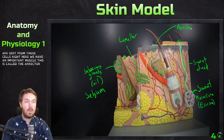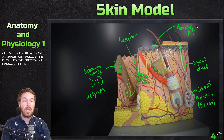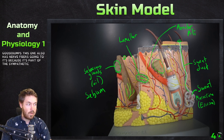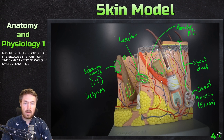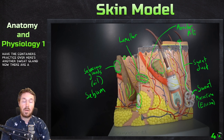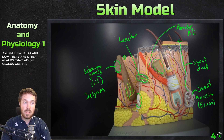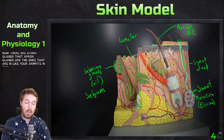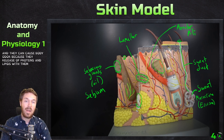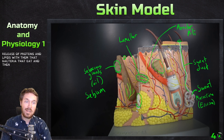Here we have the erector pili muscle, which is responsible for goosebumps. It has nerve fibers going to it because it's part of the sympathetic nervous system. There are also apocrine glands, found in areas like your armpits. These release proteins and lipids that bacteria consume, and the bacteria then release odorous byproducts — which is what causes body odor.